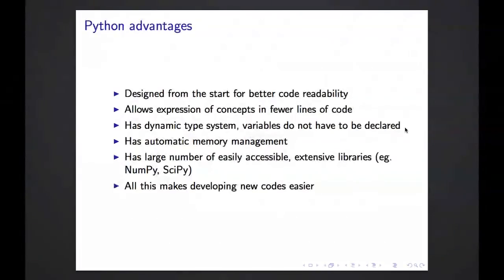So what are the Python advantages? Python has been designed from the start for better code readability. It allows expression of concepts in fewer lines of code. It has a dynamic type system so that you don't have to declare every single variable like you do in Fortran and C, which makes your life much easier. It has automatic memory management so you don't have to allocate and deallocate memory, something that's easy to mishandle in code like C. And very importantly, it has a large number of easily accessible and extensive libraries, for example NumPy and SciPy. All these features make developing new codes quite easier, which for scientists is quite important.